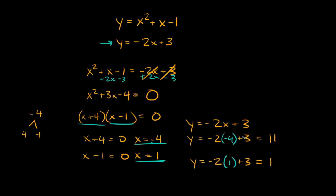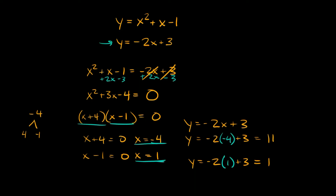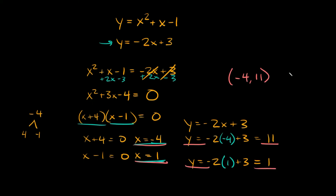So when we plugged in x equals negative 4 we got y equals 11 — that's our first solution, the pair negative 4, 11. Then we plugged in x equals 1 and got y equals 1, so that's our second solution, the pair 1, 1. Those are your two solutions to this system of equations.